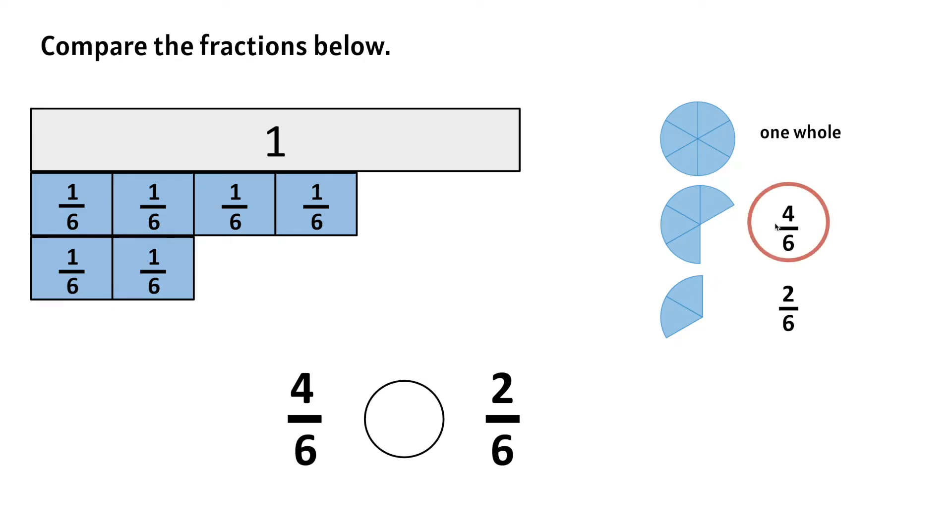We notice that 4 sixths is greater than 2 sixths. There is more pie left here than there is here. So we can say that 4 sixths is greater than 2 sixths.